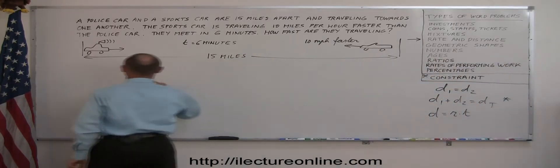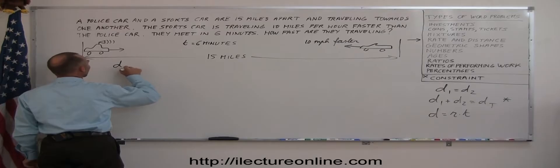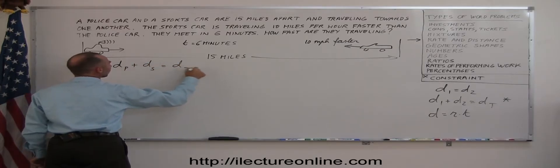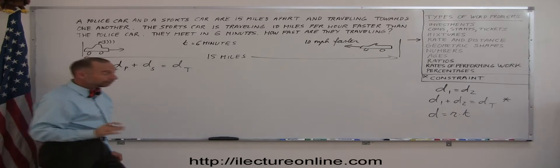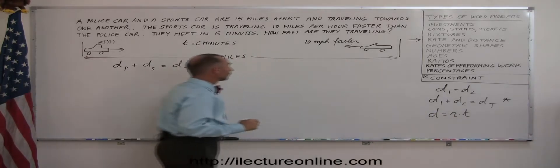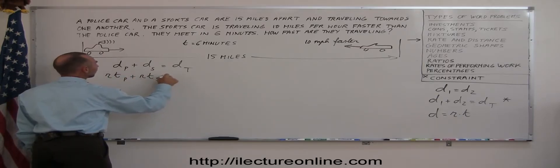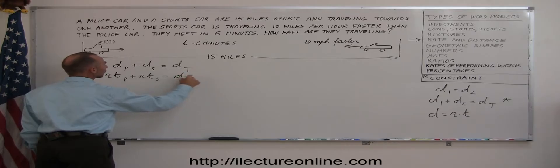So let's try that. So distance by the police car plus the distance by the sports car equals the total distance travel. And again, remember that the distance is the rate times the time. So that means the rate times the time of the police car plus the rate times the time of the sports car equals the total distance travel.